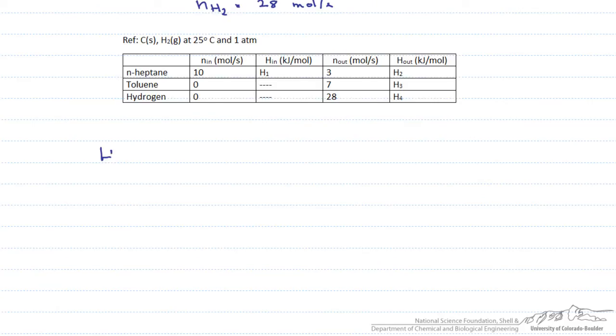Now we are going to look up those heats of formation in a physical properties table. The heat of formation for heptane is minus 187.8 kilojoules per mole. The heat of formation for toluene is 50 kilojoules per mole. The heat of formation for hydrogen gas is zero because it is already in its elemental form, and our reference is H2 gas at 25 degrees C.